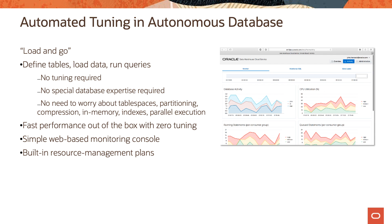When it comes to automated tuning in autonomous database, customers can just load and go: they define the tables, load data, and start running queries without any tuning activities or special database expertise. They don't have to worry about creating or managing tablespaces, partitioning, compression, in-memory indexes, or parallel execution. Oracle autonomous database gives best-in-class performance out of the box with zero tuning, and provides a simple web-based monitoring console showing database activity, CPU utilization, running statements, and queued statements.